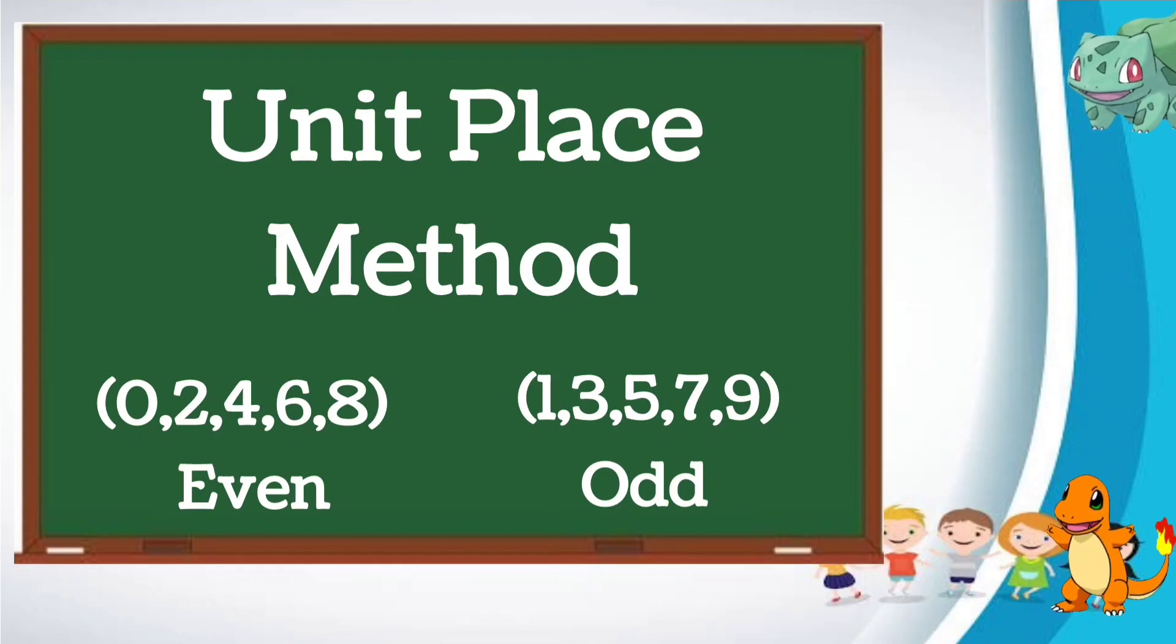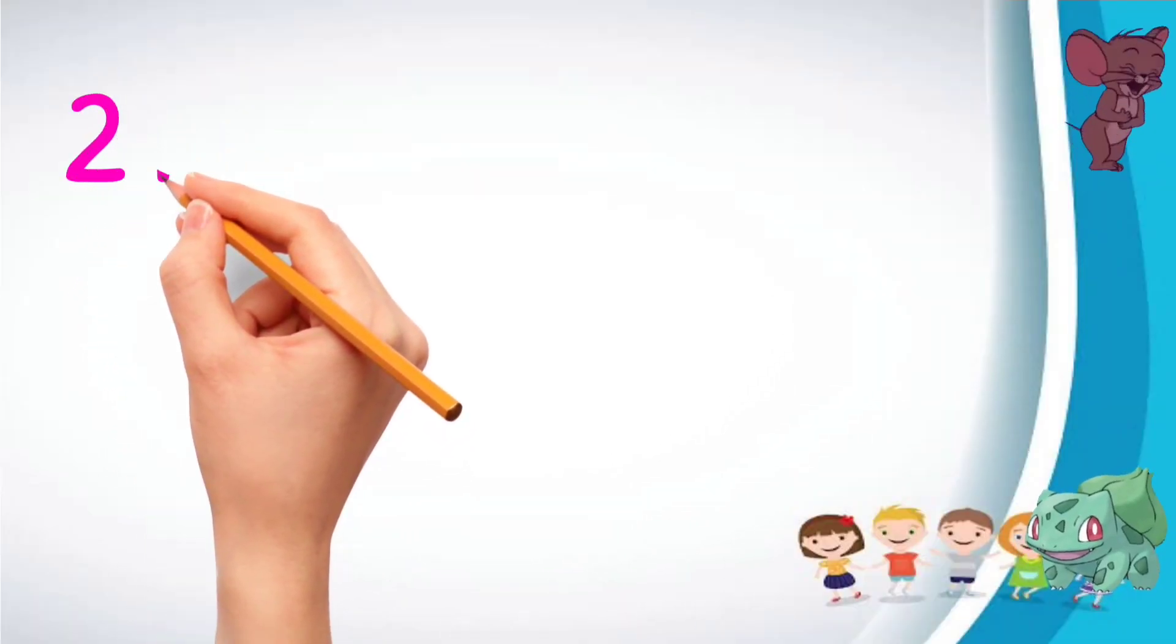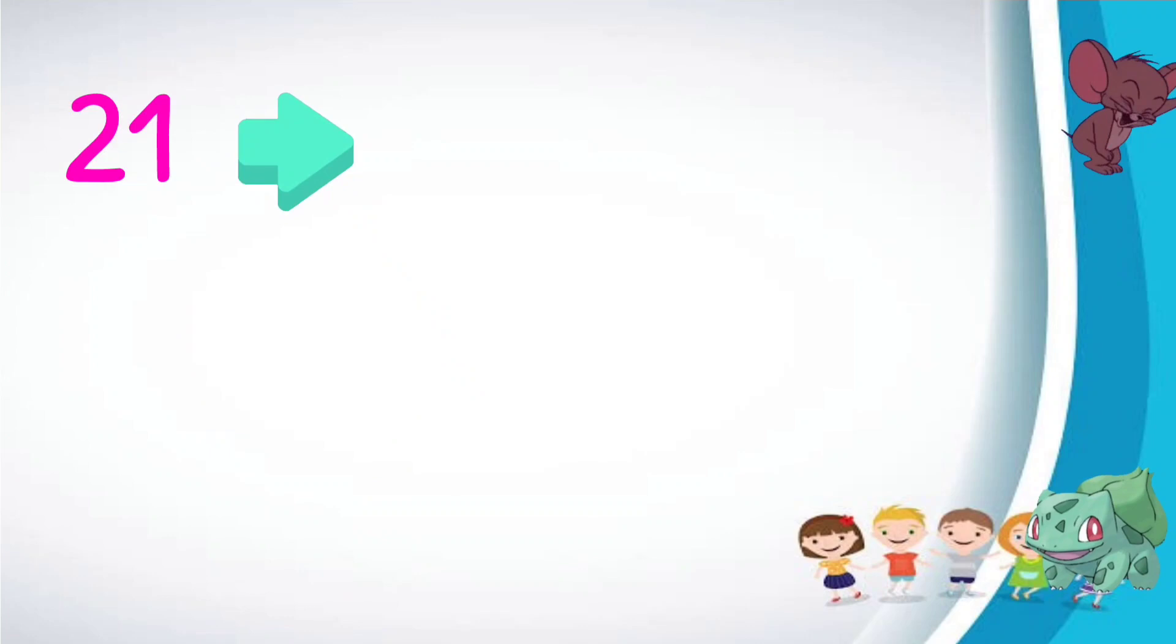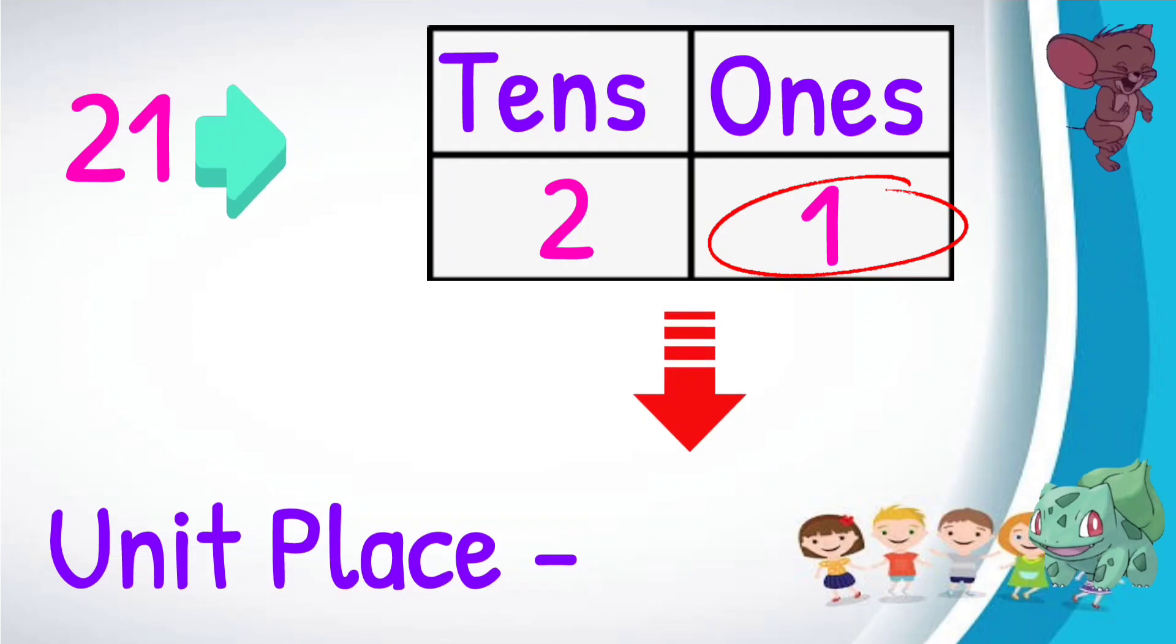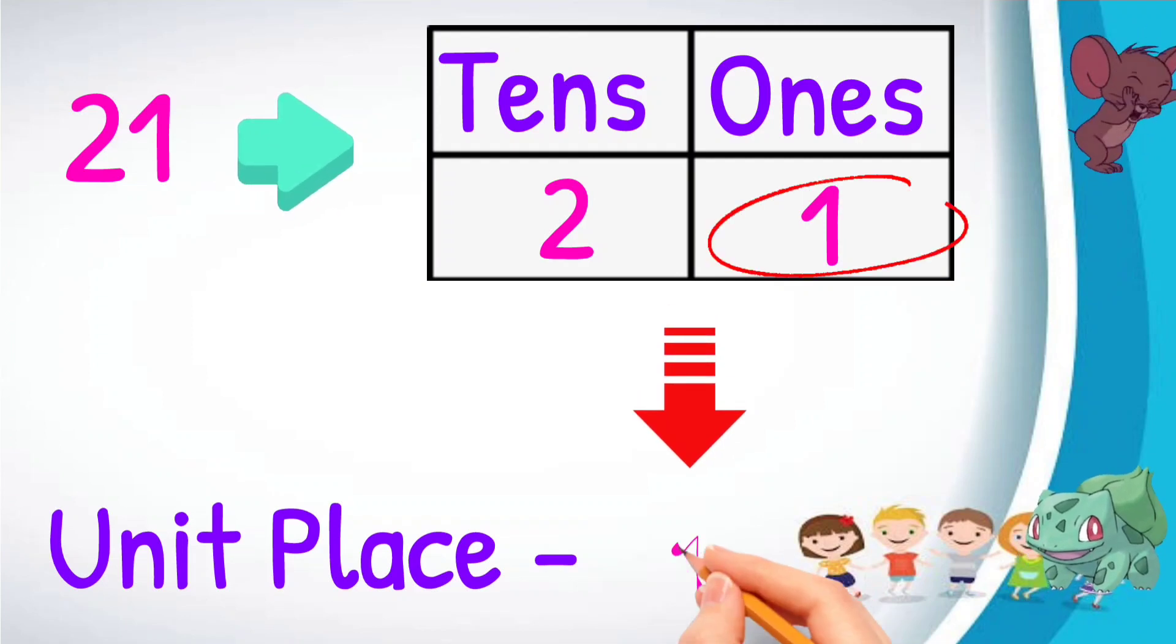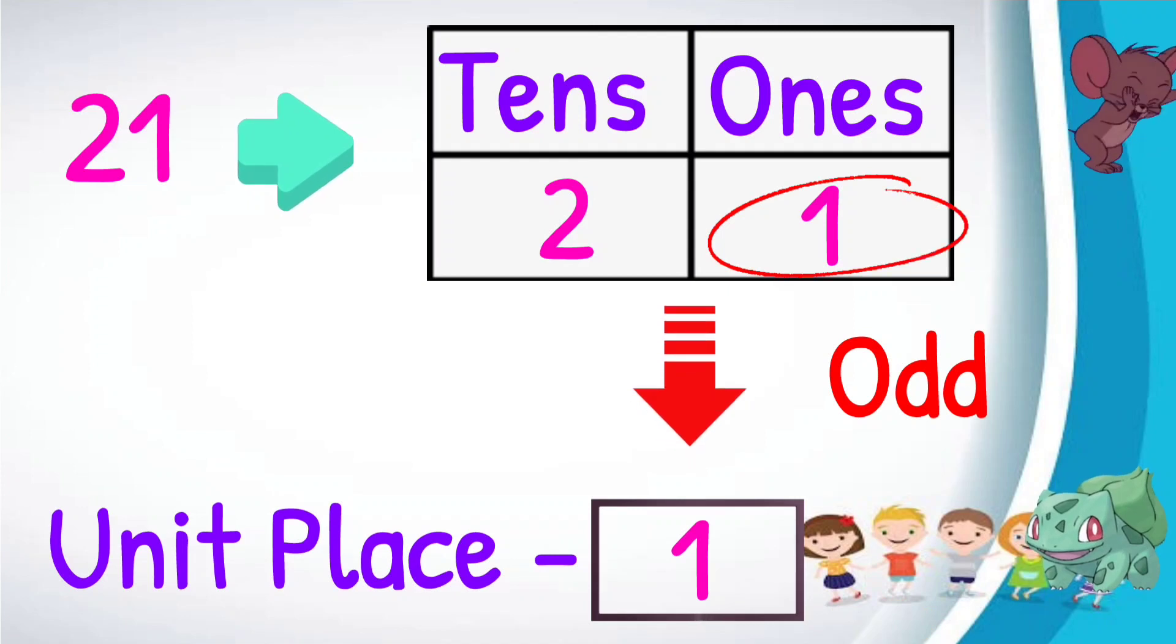Now let us study unit place method in detail. Now let us take an example of number 21. 21 can be split into one's and ten's places as two and one. The number in one's place is one. So one is an odd number. So 21 is odd.